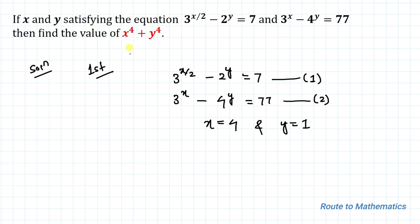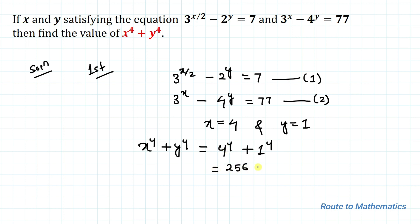We are asked to find x⁴ + y⁴. Substituting x = 4 and y = 1, we get 4⁴ + 1⁴ = 256 + 1 = 257. That is our answer for the first method.